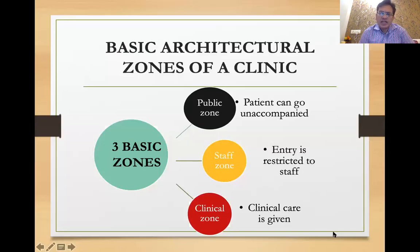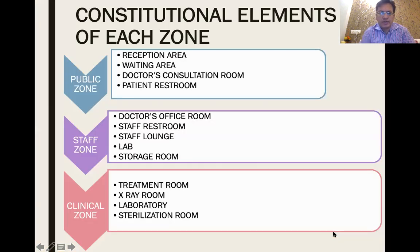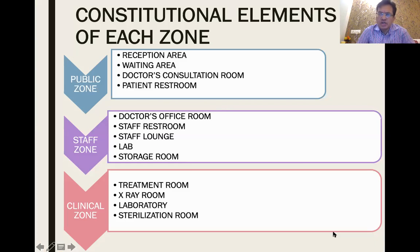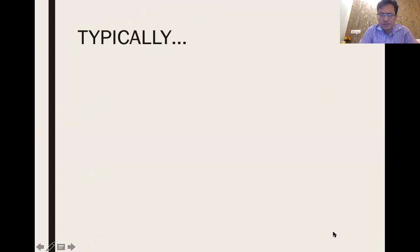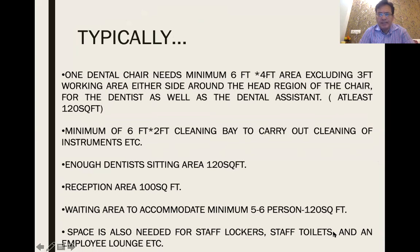Let's look at the basic architectural zones of a clinic. There is a public zone, a staff zone, and the clinical zone. The public zone includes the reception area, waiting area, doctor's consultation room, and patient restroom. The staff region includes the doctor's office, staff restroom, staff lounge, laboratory, and storage room. The clinical area comprises the treatment room, X-ray room, laboratory, and sterilization room.